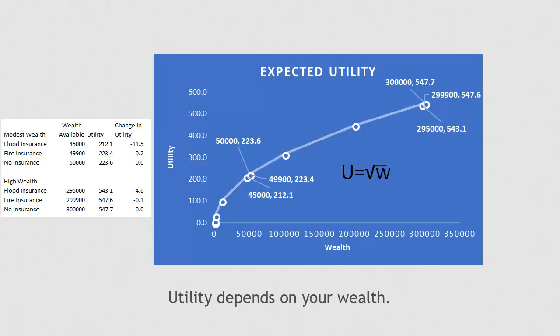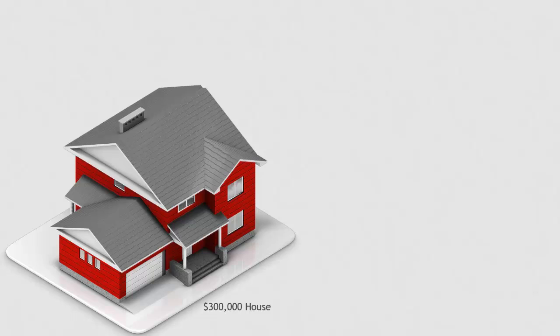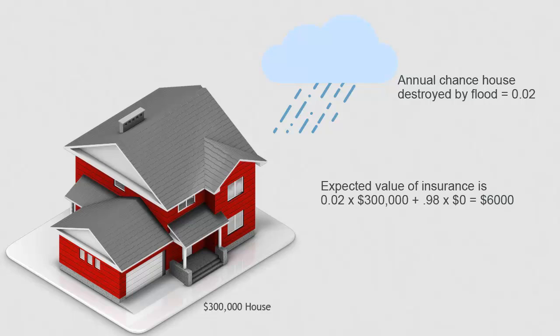Even with modest wealth, the change in utility is slight from $223.6 to $223.4. Now consider flood insurance. Suppose that $300,000 house is in the 50-year floodplain and it has a 0.02 chance of being destroyed in any one year. The expected value of insurance is 0.02 times 300,000, which is equal to $6,000. If you can find flood insurance for that amount or less per year, it's a good deal from an expected value perspective.